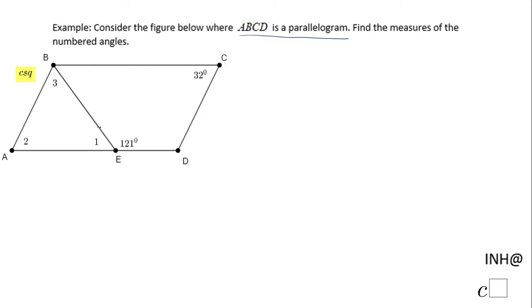This angle one, if you take a look, and this angle that is 121 degrees are supplementary angles. Why? Because they form a line. In fact, we can call them a linear pair. So that's my first statement here. I'm going to say the measure of angle BEA, which is angle one,